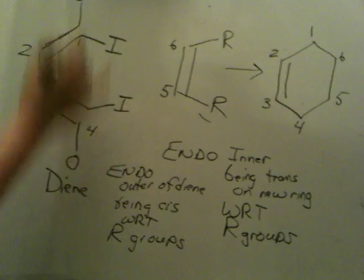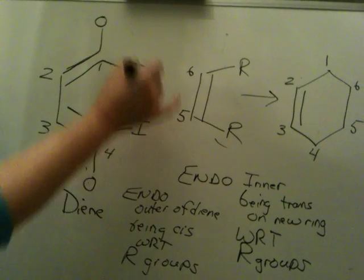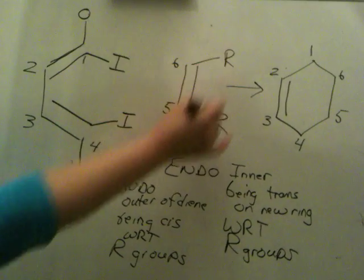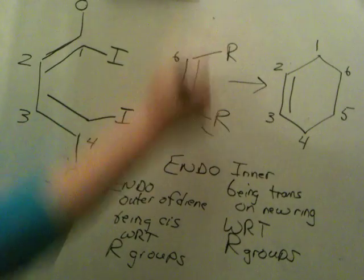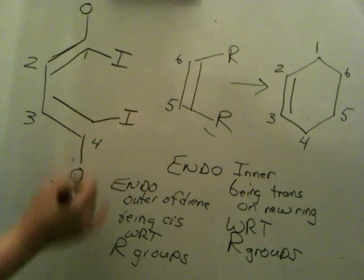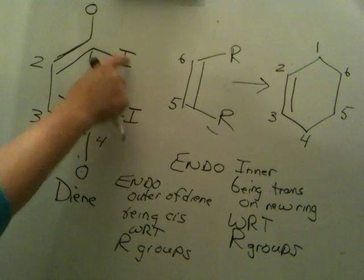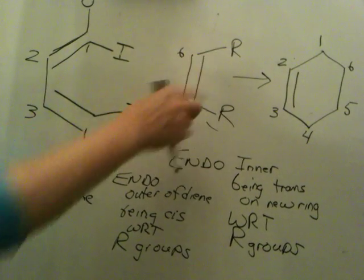Now, we know these two positions are cis with respect to each other on the new ring. These are cis with respect to each other on the new ring. These are cis with respect to each other on the new ring. But endo is about how these are oriented with respect to these or respect to those. So how do I follow this?